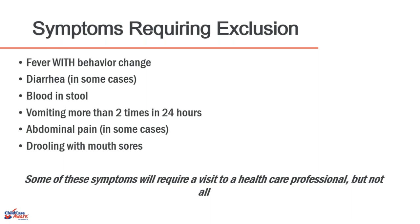The next level of symptoms requiring exclusion includes: fever that develops with a behavior change, diarrhea, blood in the stool, and vomiting more than two times in 24 hours. Since a child is in your care probably no more than eight to ten hours, if you see vomiting more than two times within that period, that falls into the category of calling the parent and excluding the child.